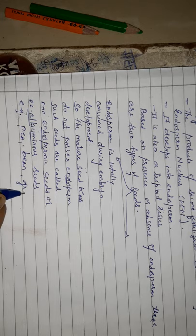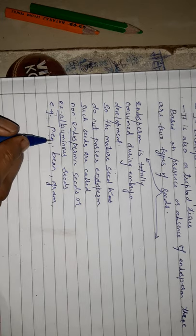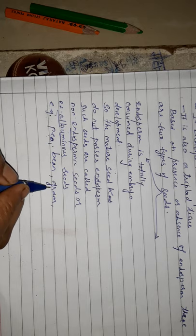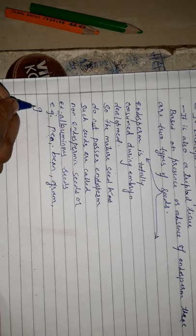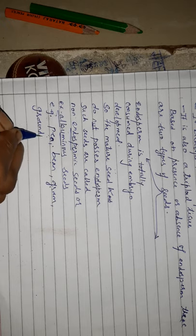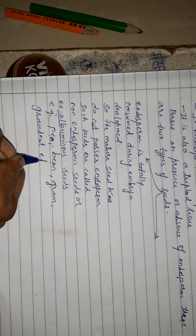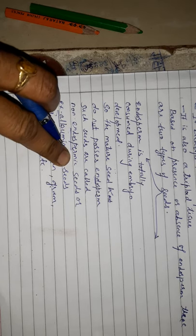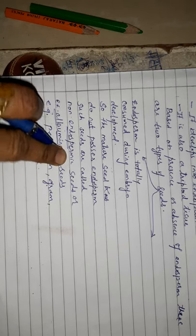Examples of non-endospermic seeds include bean, gram, and pea. Bean is called 'dhoda' and gram is 'harbara' in Marathi. All pulses are included here, and groundnut as well. All these seeds are without endosperm.